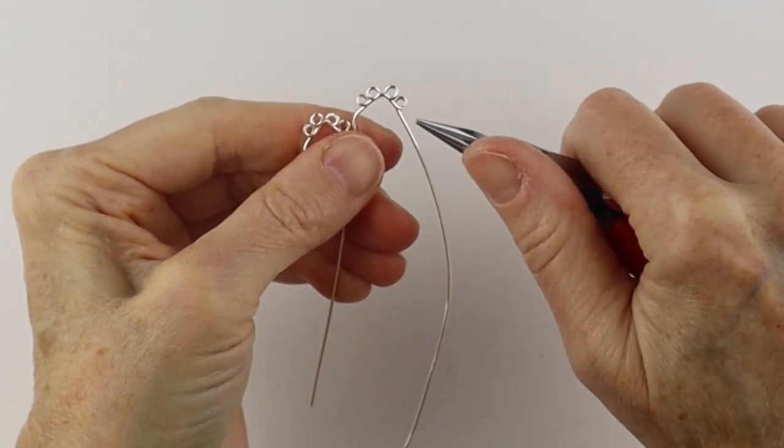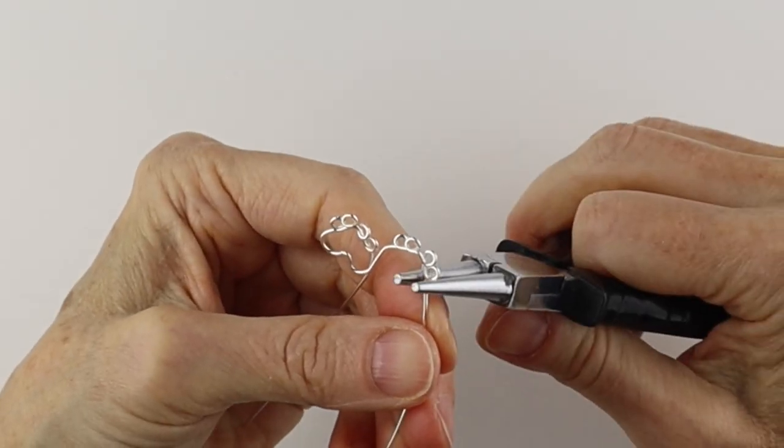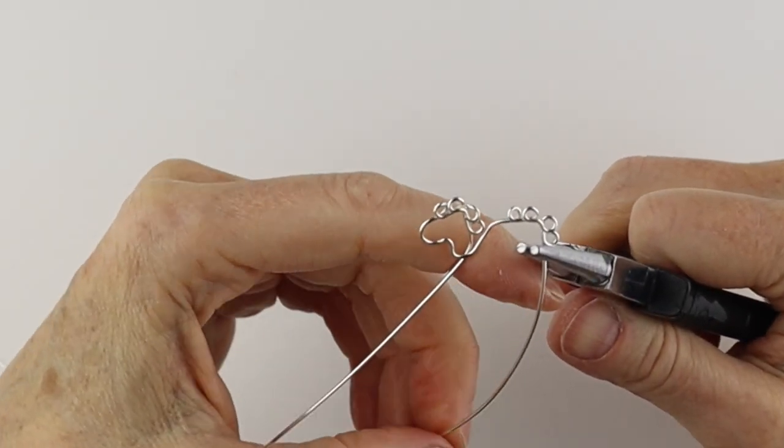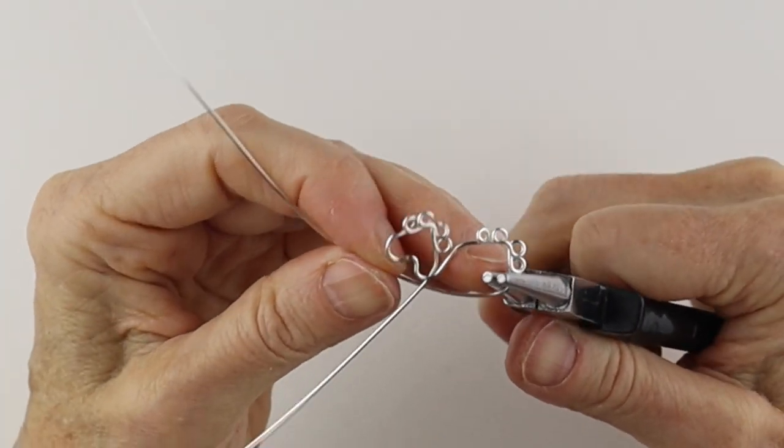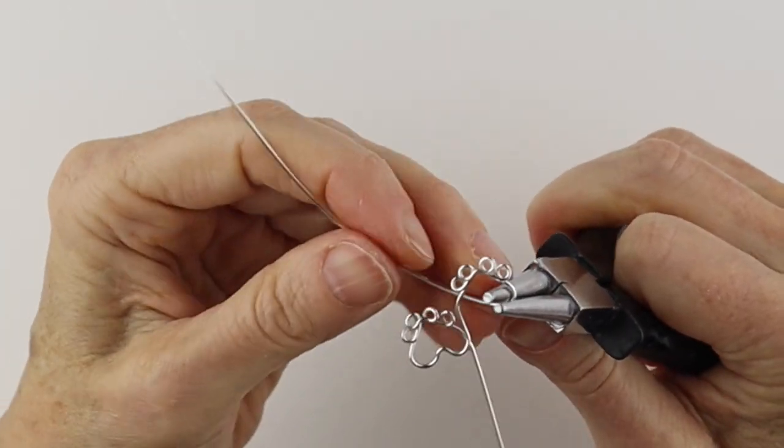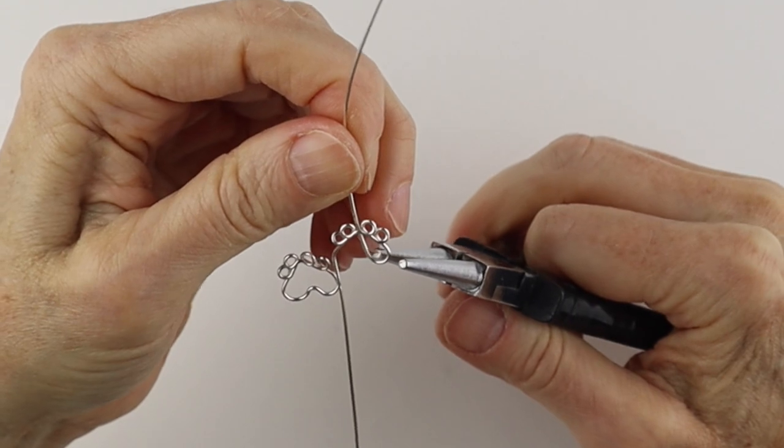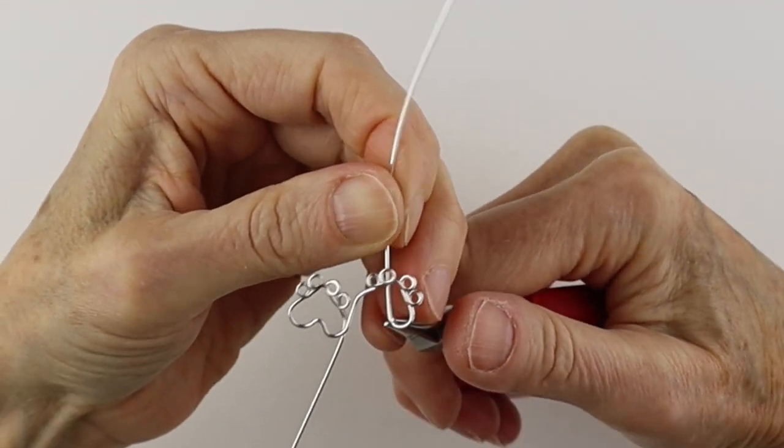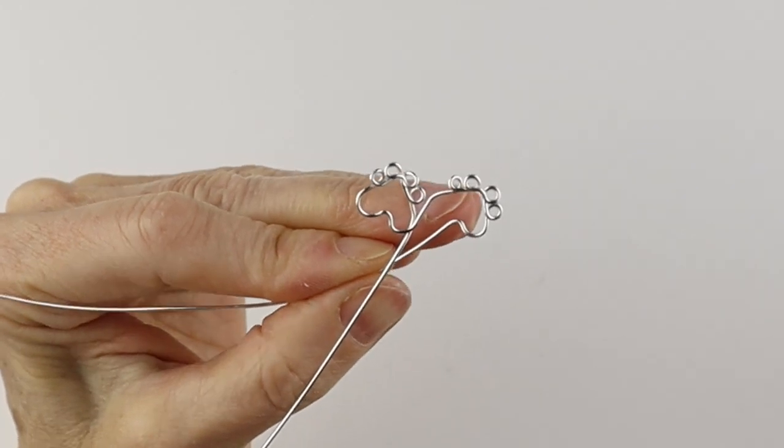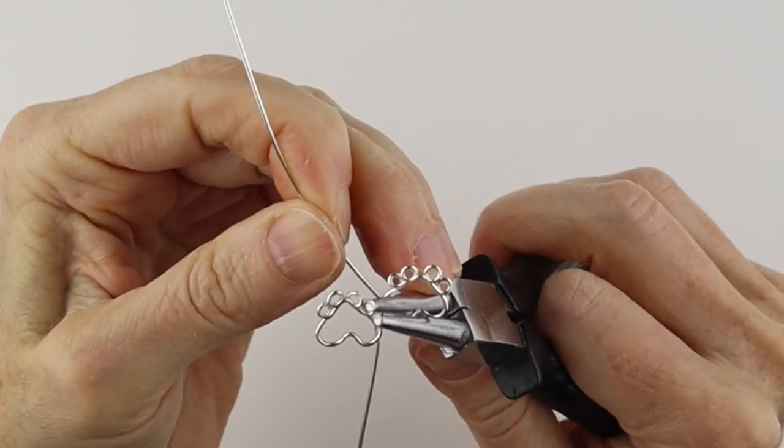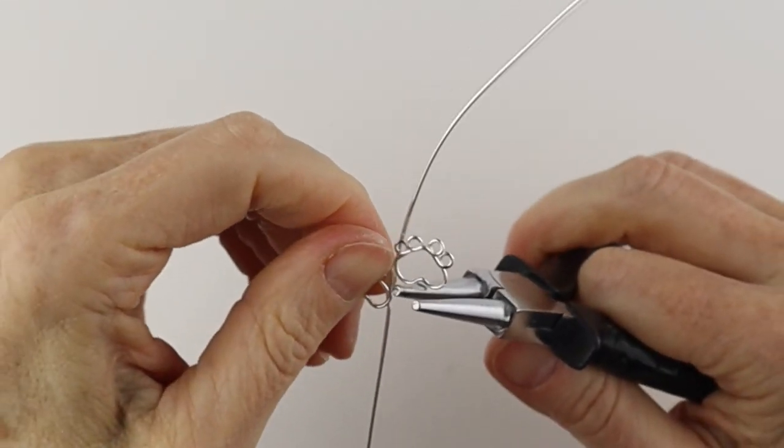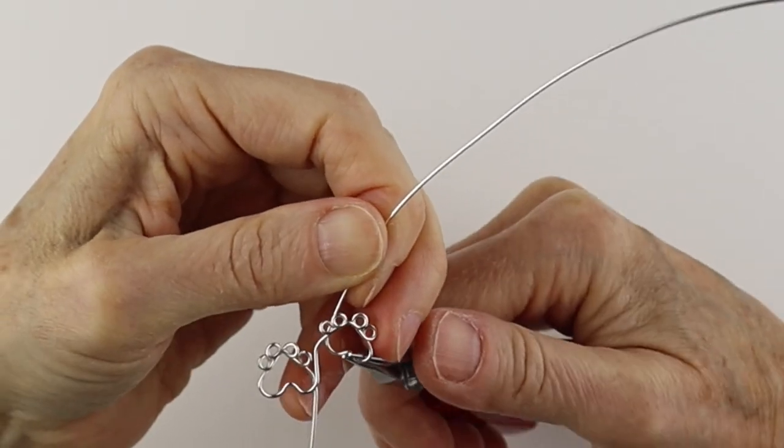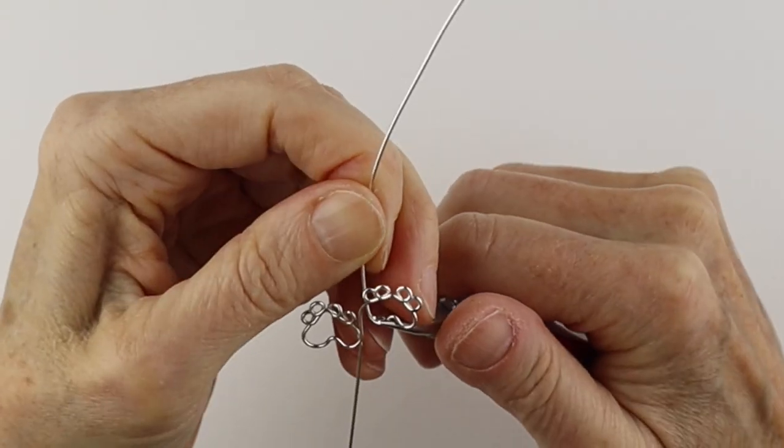So we have two going up, two going down, and then get the larger round pliers and form the bottom of the paws. So around here, compare it with the other one. So we're going to bring this one down and up.